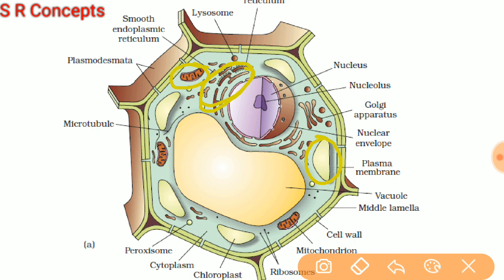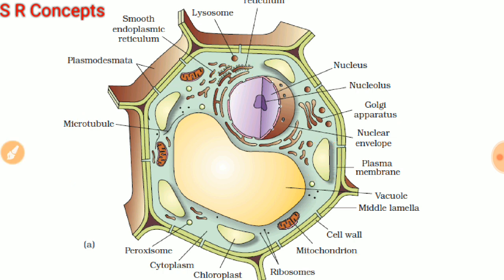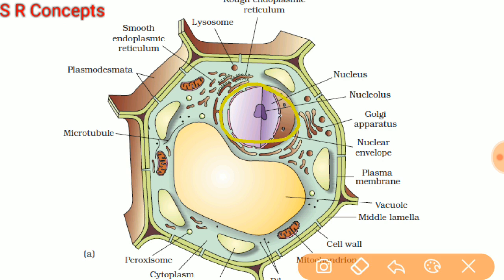Next, look at this structure — these are a group of membranous disc-like structures, tube-like structures, and membranous rounded vesicles. This is an extensive network of membranous vesicles, tubules, and discs — this network looks like a reticulum and that's why it is called endoplasmic reticulum. The function of endoplasmic reticulum is to produce proteins, lipids (fats and oils), and steroid hormones. Note that the endoplasmic reticulum actually originates from the membrane of the nucleus.